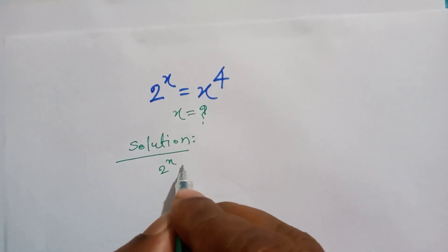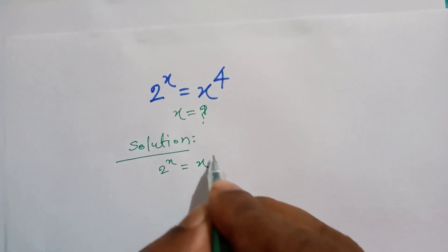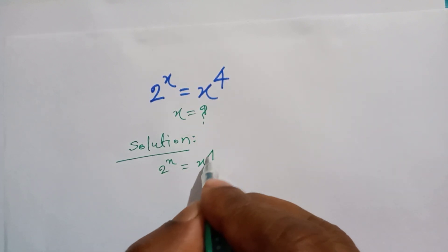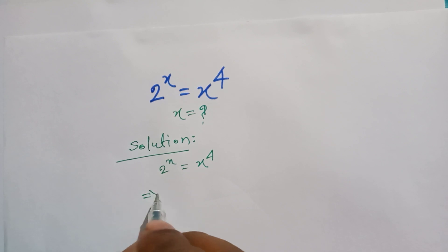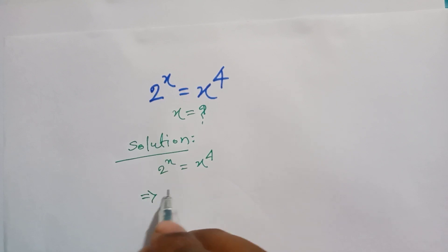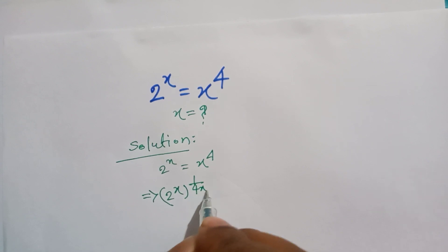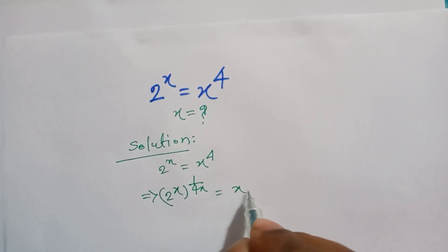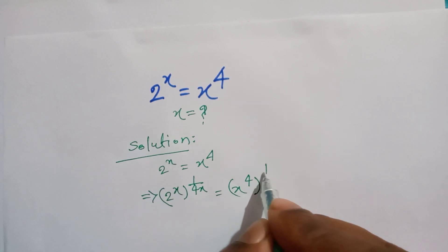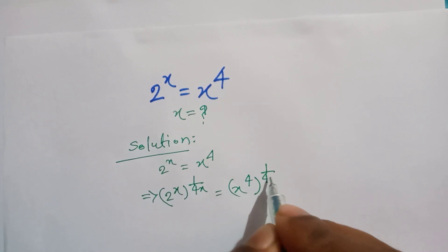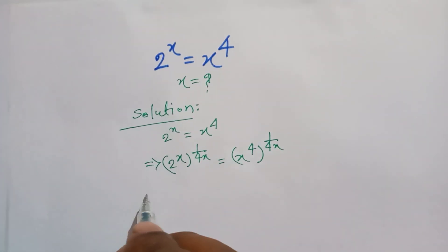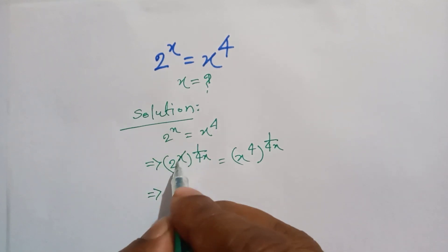Here we have 2 to the power x is equal to x to the power 4. Firstly, we multiply both sides' power by 1 over 4x. So it becomes 2 to the power x, all raised to the power 1 over 4x, is equal to x to the power 4, all raised to the power 1 over 4x.